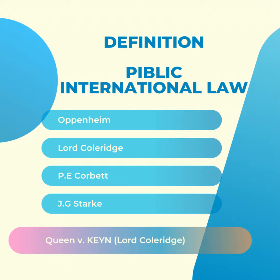Stark's definition also includes two additional points: first, it includes the rules or law relating to the functioning of international institutions and their interaction with other states or individuals; and second, it also includes rules of law relating to individuals and non-state entities when their conduct or activities are of concern to the international community.